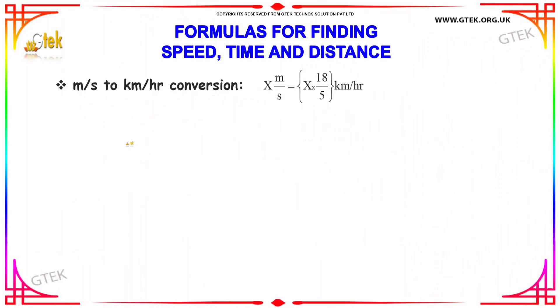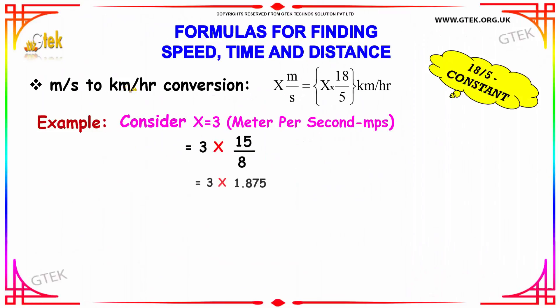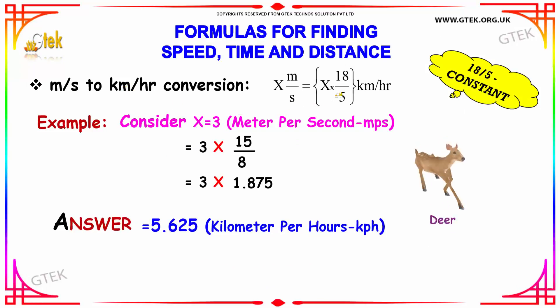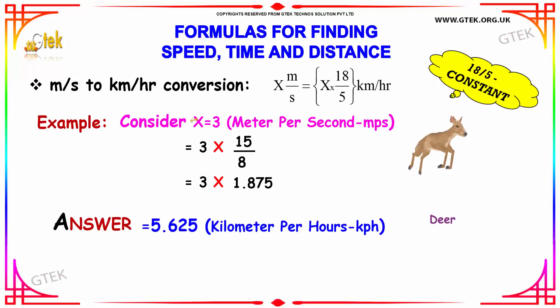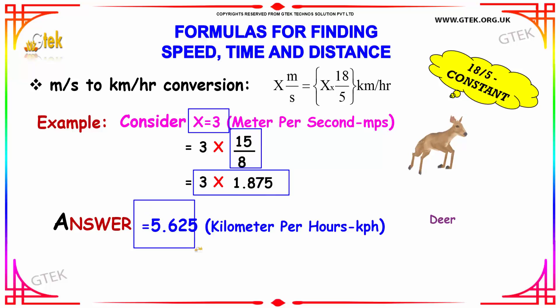If it is in meter per second, converting into kilometer per hour, multiply by 18 divided by 5. So x equals 3 meter per second into 18 by 5, we get 3 into 1.875, and the answer is 5.625 kilometer per hour.